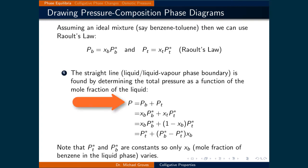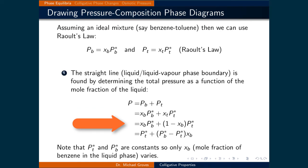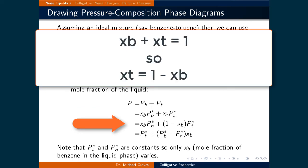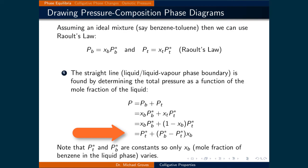The total pressure due to the liquid is the sum of the partial pressures of benzene and toluene. Using Raoult's law: P_total = x_benzene·P*_benzene + x_toluene·P*_toluene. Since the mole fractions must add to one, x_toluene = 1 − x_benzene. Rearranging gives P_total = P*_toluene + (P*_benzene − P*_toluene)·x_benzene. The pure component partial pressures are constants, so only the mole fraction of benzene varies. This equation defines the liquid and liquid-vapor phase boundary.